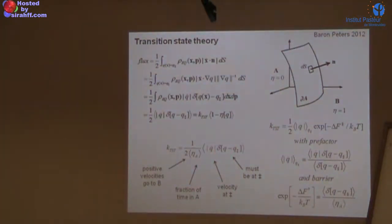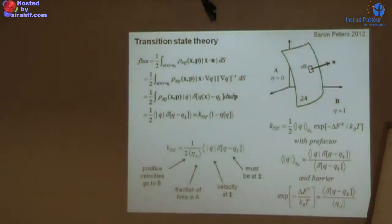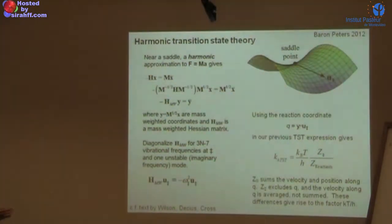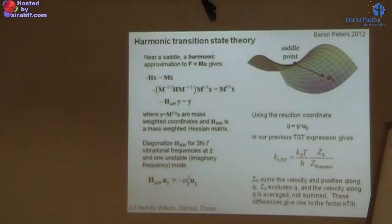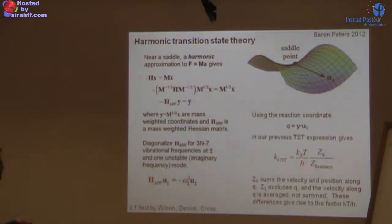Notice: there is no ħ in this formula — no quantum mechanics in transition state theory whatsoever, because the whole theory assumes you know both a particular value of Q and its velocity Q̇, which is impossible in quantum mechanics. The h in the expression has no quantum mechanical origin — it comes from the way partition functions are defined with the thermal de Broglie wavelength, and from the fact that the reactant state has one more degree of freedom than the transition state. The pre-factor that people often associate with quantum mechanics would change if we measured action in different units, but the product would remain the same.